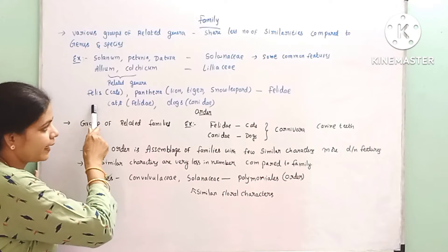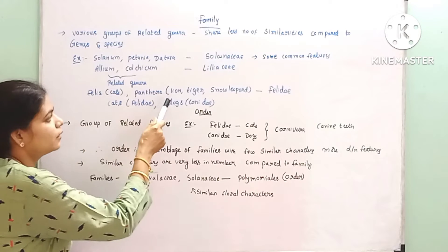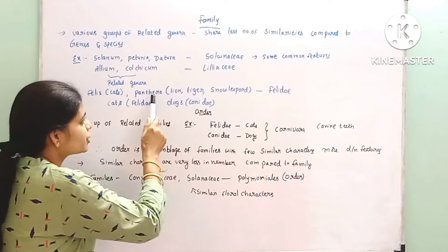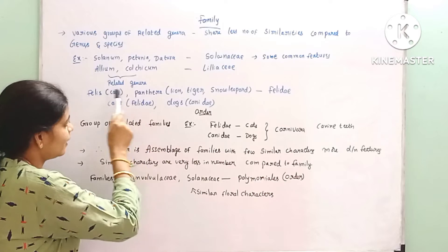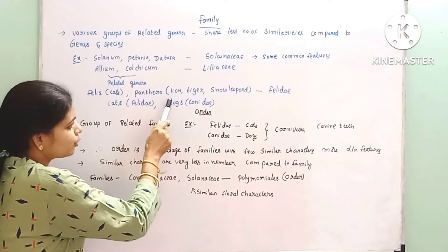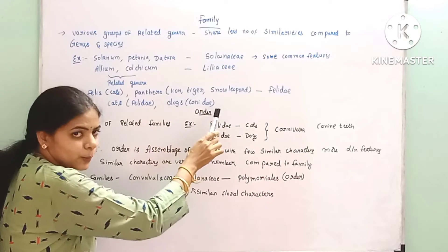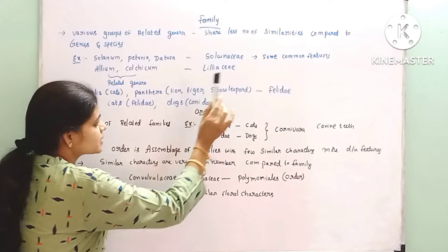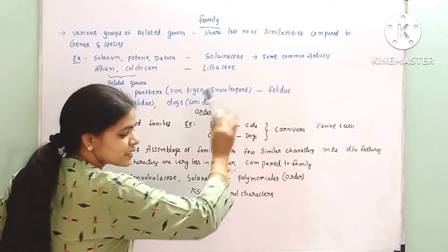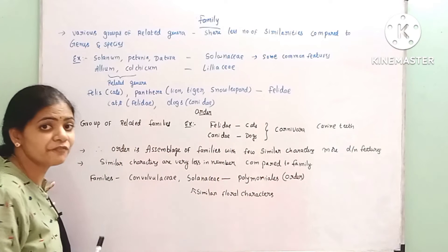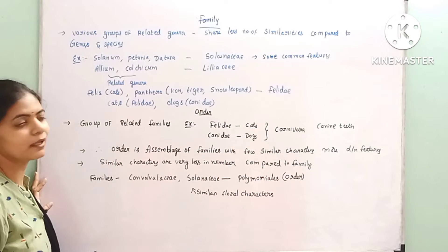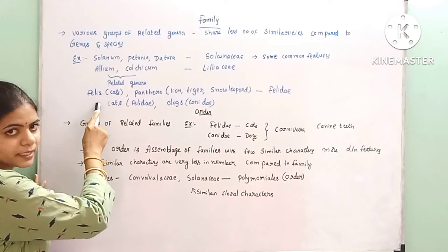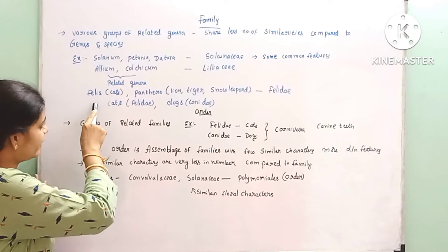For animals: cats belong to Felis, while lion, tiger, and snow leopard belong to Panthera. These two genera share some similar characters, so they are placed under one family — Felidae. So cats and related genera are placed under the family Felidae.